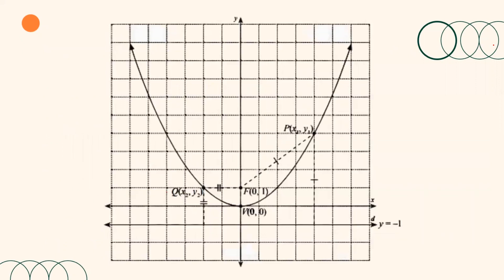In illustrating the definition, consider this parabola. The vertex of the parabola is at the origin. The focus is at the point (0, 1) and the directrix is the line y equals negative 1. Let p and q be points on the parabola with coordinates (x₁, y₁) and (x₂, y₂). Notice that the distances of p from the focus and its distance from the directrix are equal. Likewise, the same goes for point q — its distance from the focus is equal to its distance from the directrix.